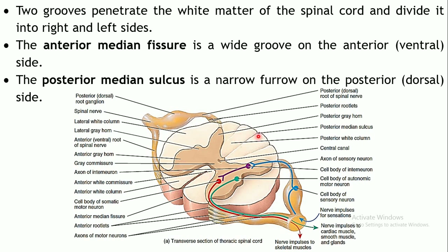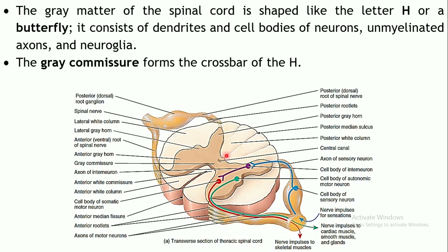There are two grooves — one towards the anterior surface and one towards the posterior surface. The groove on the anterior surface is wider and is known as the anterior median fissure. The one located posteriorly is quite narrow and is called the posterior median sulcus.